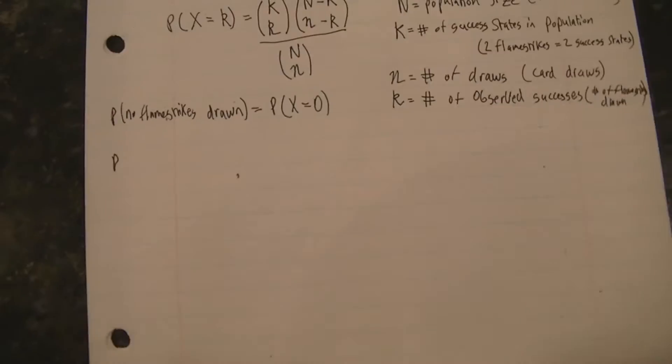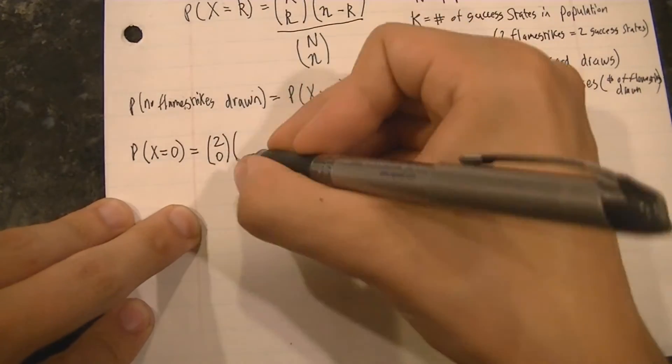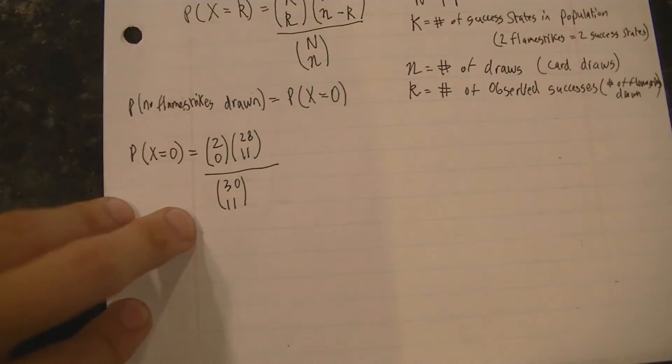Now all that's left to do is plug in our numbers into the hypergeometric distribution. We start by setting our random variable x equal to zero,